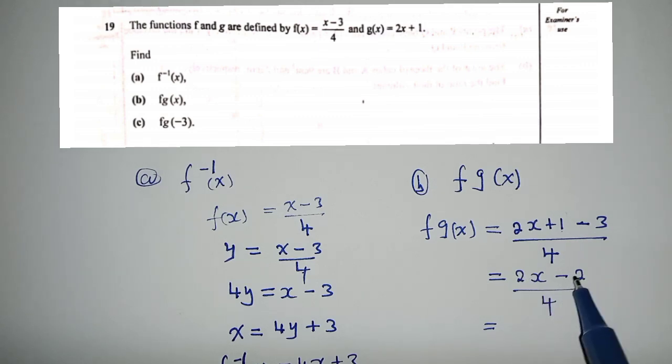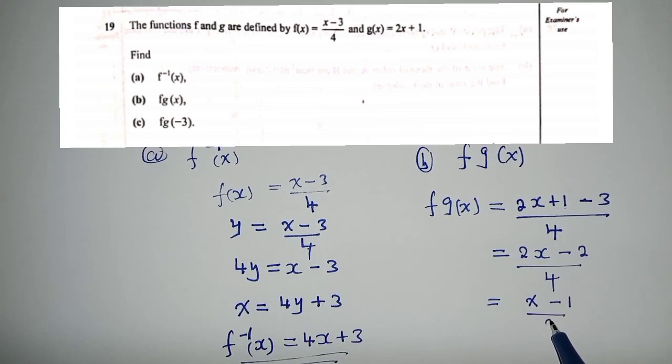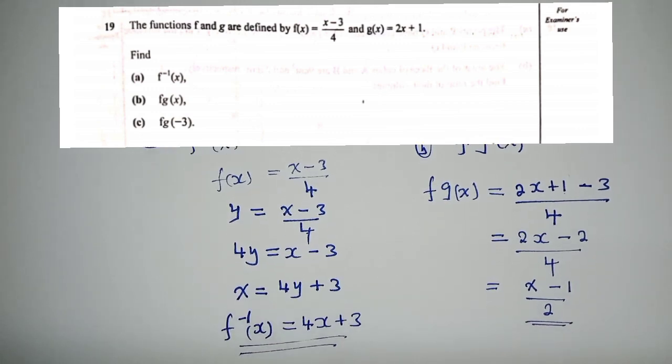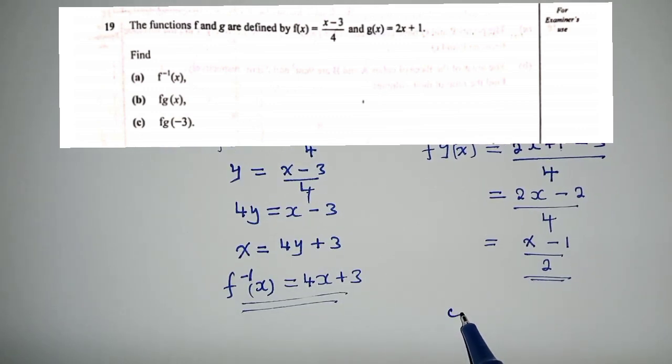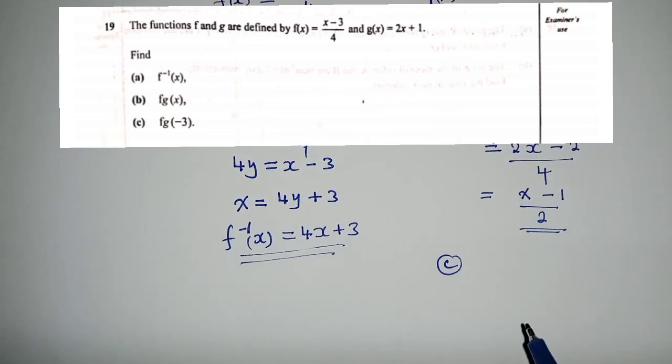Now work out things. We have 2x minus 2, because 1 minus 3 is negative 2, over 4. You can even reduce it because 2 into 2 is 1, into 4 is 2, so you have (x - 1) / 2. That's the answer, and we go into question C.